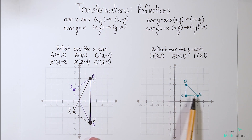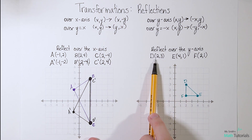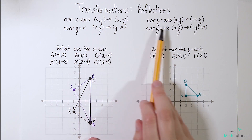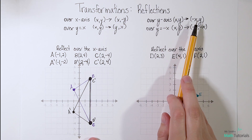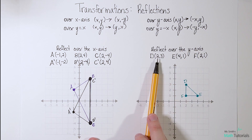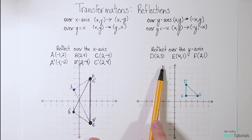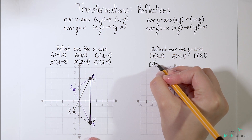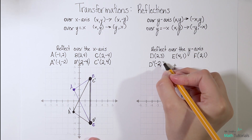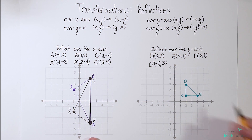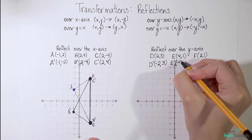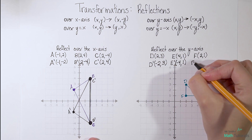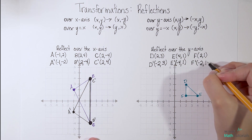This one asks us to reflect this turquoise triangle over the y-axis. It does already give us the points of where that triangle currently is, and we just need to take each point and reflect it over the y-axis using this rule: (x, y) becomes (-x, y). So this time the x is going to flip sign and the y will stay the same. For D, we're going to create a D prime — x is currently positive 2, so we make it -2, and the y is 3 so we leave it 3. For E prime, the 4 is currently positive so it becomes negative; the y is positive 1 so it stays positive 1. For F prime, the 2 will become negative and the 1 will stay the same.